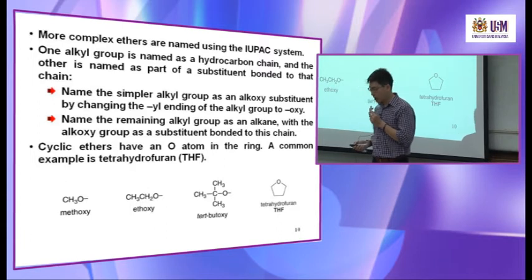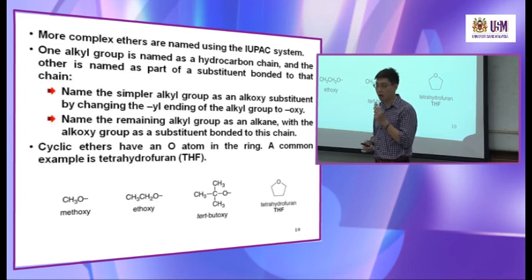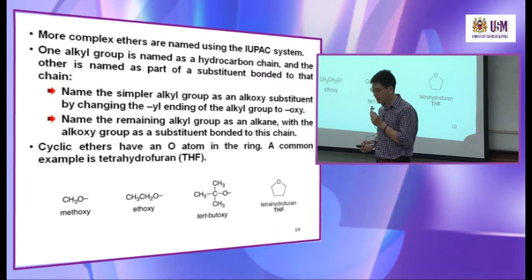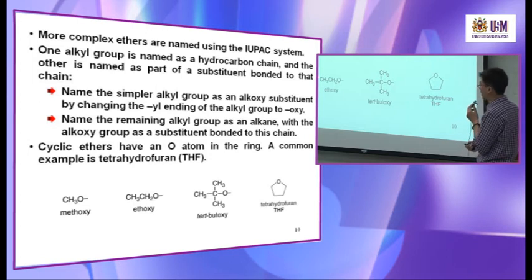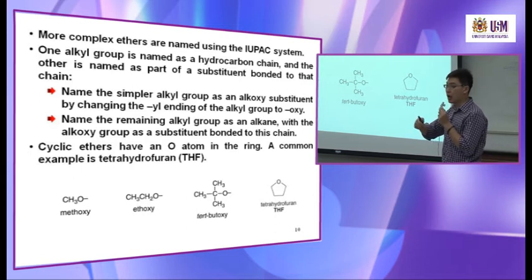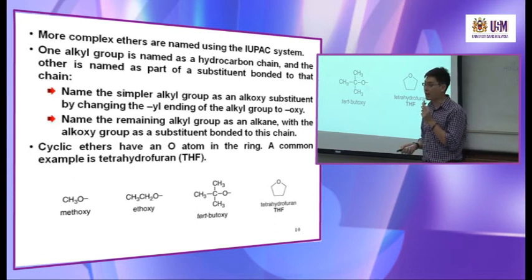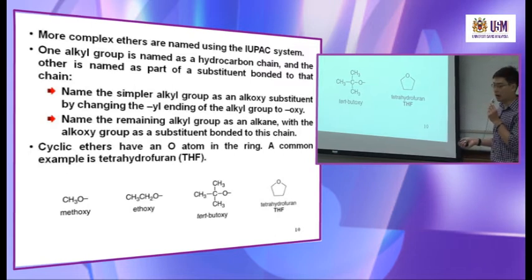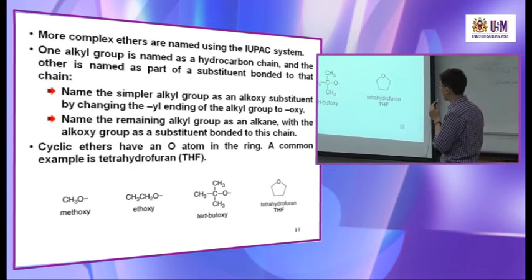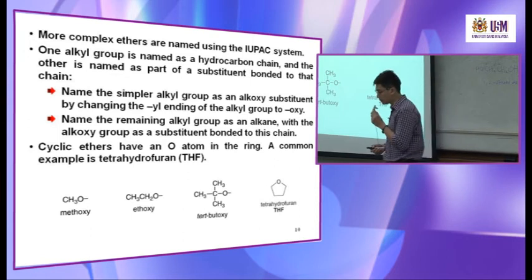For more complex ethers, you can use the IUPAC system. One alkyl group is named as a hydrocarbon chain, and the other is named as an alkoxy substituent bonded to that chain. For example, CH3-O becomes a methoxy group. If it's attached to a longer chain, it becomes methoxyhexane. You also have ethoxy, tert-butoxy groups. For cyclic ethers with an oxygen atom in the ring, a common example is tetrahydrofuran — THF — a very common solvent.